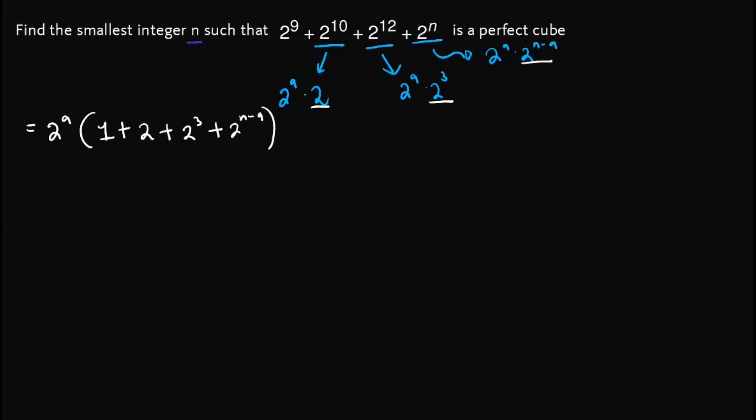And then the next thing we do is we simplify this expression. But first, we note that 2^3 is equal to 8. So simplifying this, we will have 2^9 times (11 + 2^(n-9)).